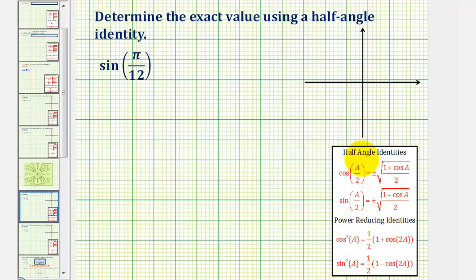For this example, we'll be applying this half-angle identity for sine, though in the next video, we'll find the same sine function value using this equivalent identity given here.